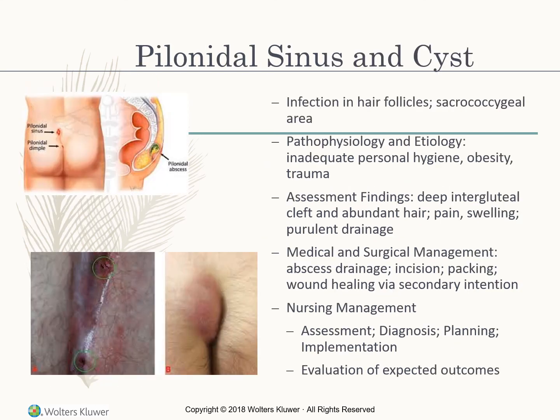A pilonidal sinus and cyst is an infection in the hair follicles of the sacrococcygeal area. Causes include inadequate personal hygiene, obesity, or trauma. Assessment findings include a deep intergluteal cleft with abundant hair, pain, swelling, and purulent drainage. Management includes drainage of the abscess, incision, packing, and wound healing by secondary intention — leaving it open. Nursing management focuses on comfort, medication, and patient teaching.